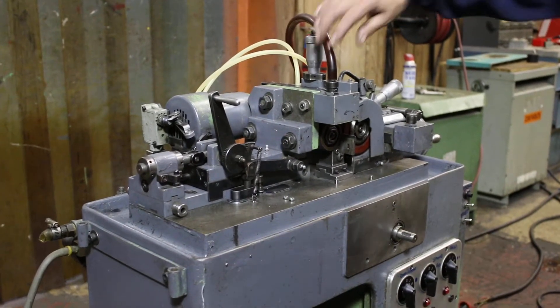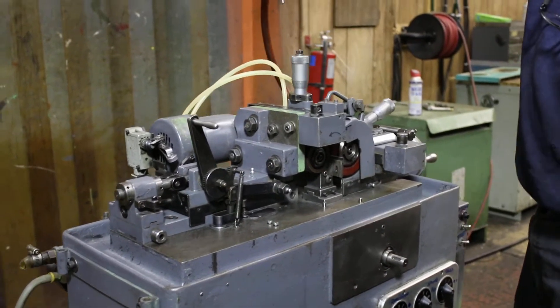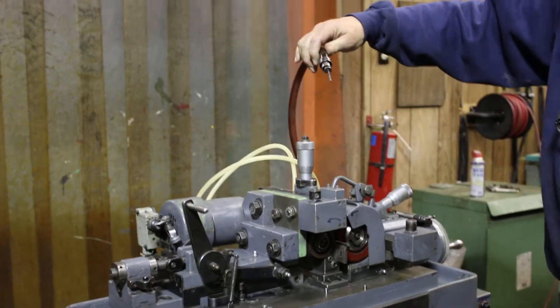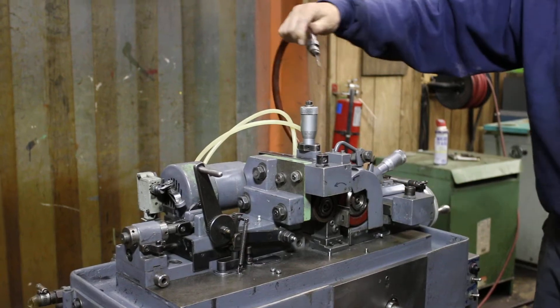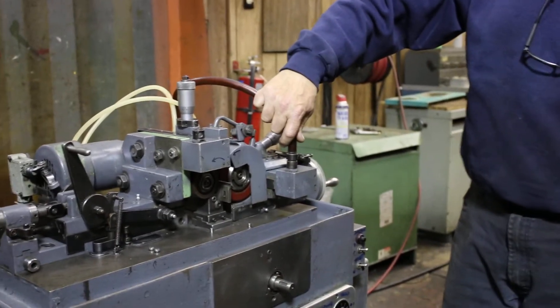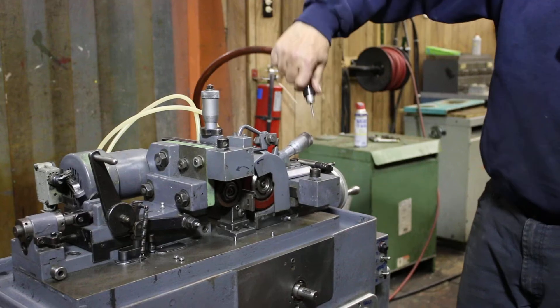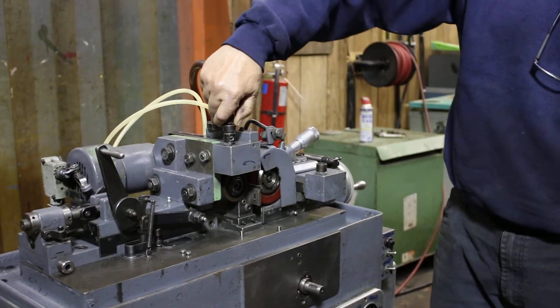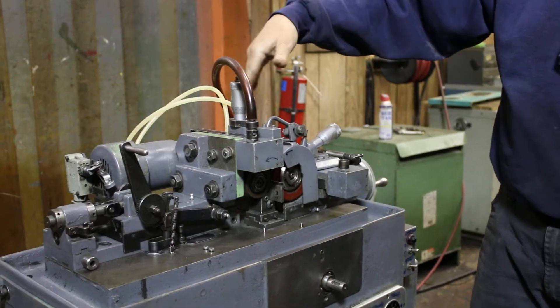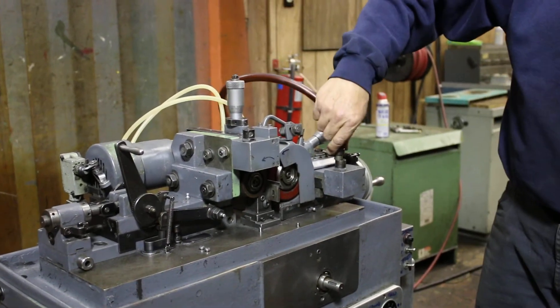The dressers when I run them are controlled by these speedometer cables. There is a separate motor for this down below. When you want to dress your grinding wheel, you stick it into this hole here, and you can either do your regulating wheel or your grinding wheel.